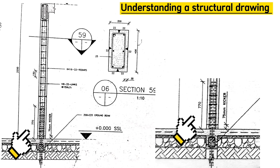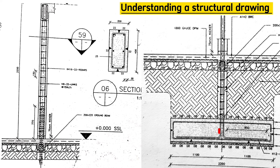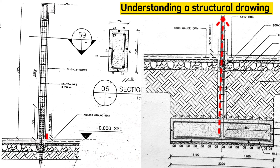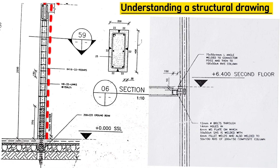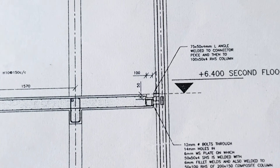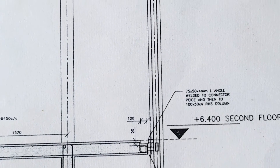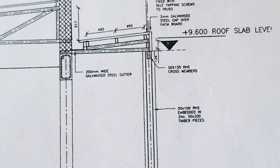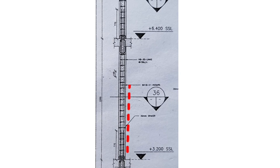Steel bars from the stub columns come from underground and stop at the ground floor level. Ground floor steel bars start from the kicker and go up to 770 millimeters above the second floor slab. Second floor column steel bars then start from there and continue upward. This pattern repeats for each successive floor.